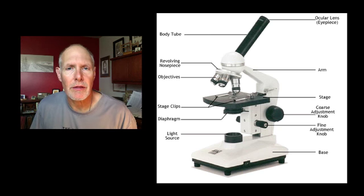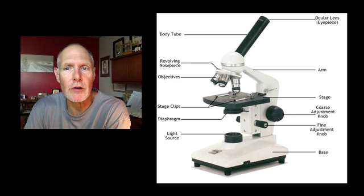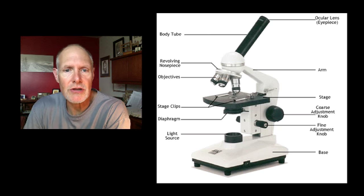So first, a little bit about a microscope. This diagram shows you the major parts of the microscope. You can see at the top is the eyepiece, or the ocular lens. There's the body tube that the light shines through. And then the nosepiece, where there's different objectives that give you the different magnifications on the microscope.